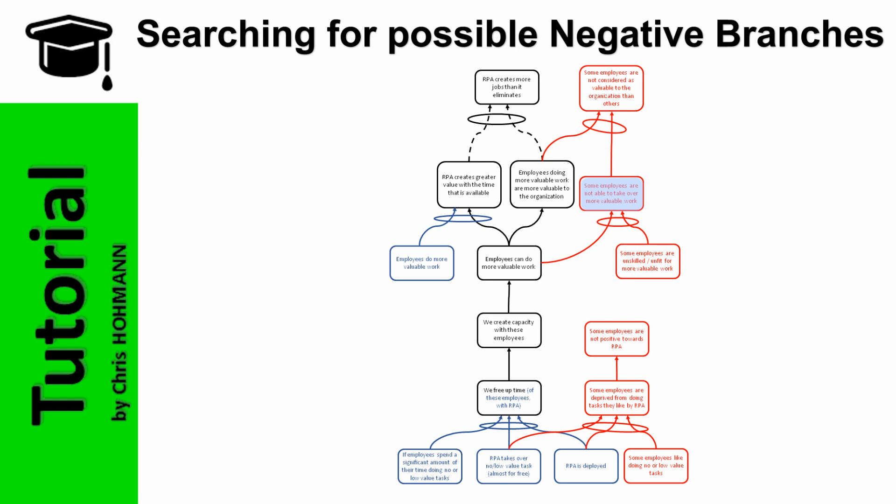If some employees are not able to take over more valuable work, and the organization makes unable and unwilling employees redundant, then some employees are made redundant or laid off. If the organization makes unable and unwilling employees redundant, and the current workload without redundant employees can be handled with RPA, then redundant employees are not replaced thanks to RPA.